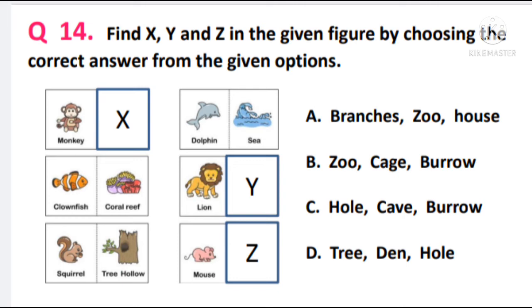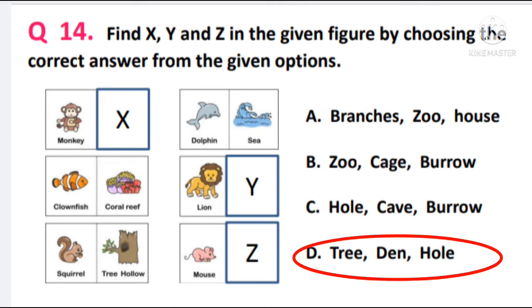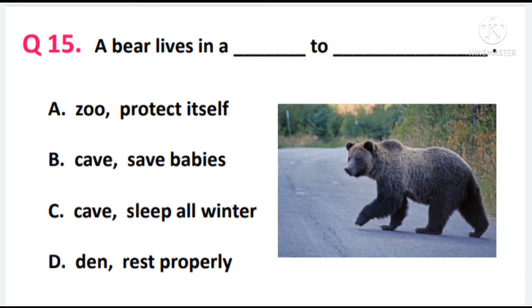Question 14. Find X, Y, and Z in the given figure by choosing the correct answer from the given options. The answer is option D — tree, den, hole. The house of a monkey is tree, the house of a lion is den, and the house of a mouse is hole.